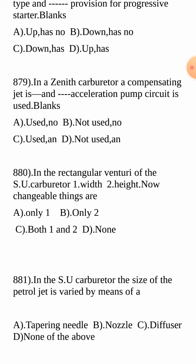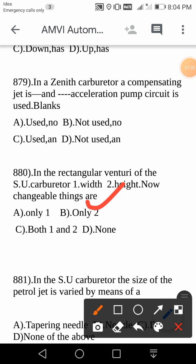Today's last question: In the rectangular venturi type of the SU carburetor, there are some variations. Is the width constant but height changeable, width changeable but height constant, both changeable, or both not changeable? In the rectangular venturi type of the SU carburetor, the width is changeable but the height is constant. Your answer is option 2 — width is changeable, height is constant.